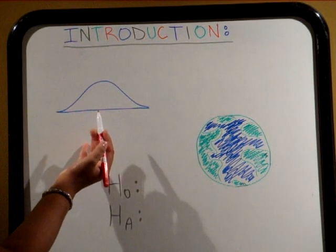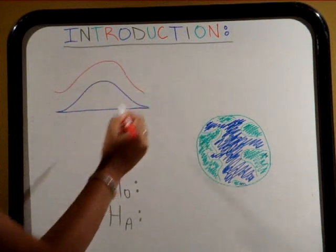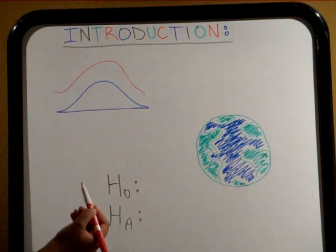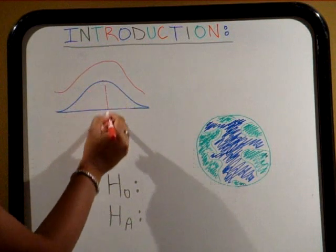Here we have the normal model. It is a bell-shaped curve, which is appropriate to use for distributions whose shapes are unimodal.